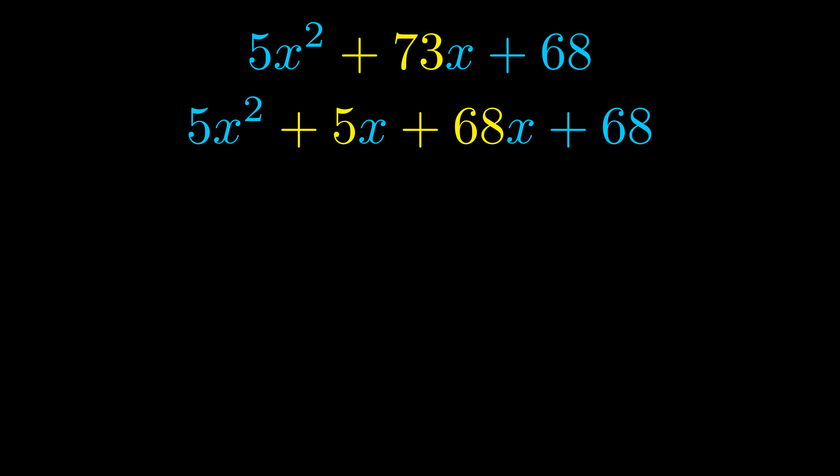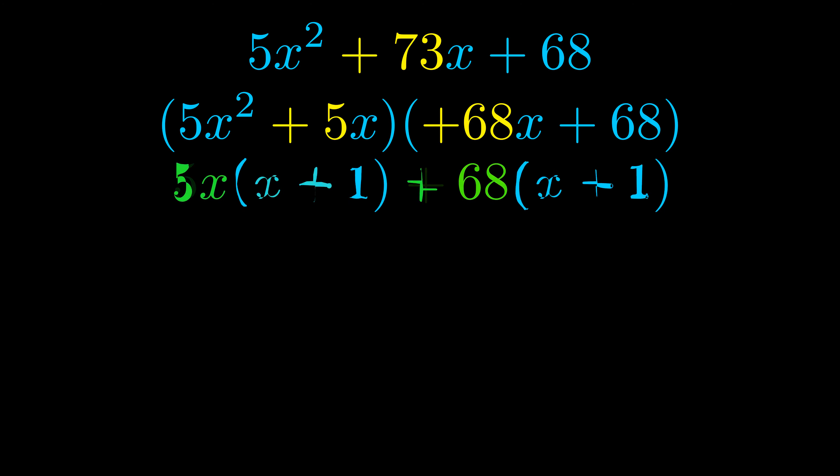Once we've done this, we go ahead and we put parentheses around the first term and the last term, and we do that so that we can take the greatest common factor out of both terms. We can see the greatest common factor is now outside in green.